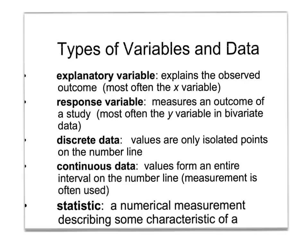Some more terms to add to your data notes. The first one is explanatory variable — it explains the observed outcome and is almost always the x variable. It's easy to remember because the prefix for this variable starts with the letter x, matching the x variable.